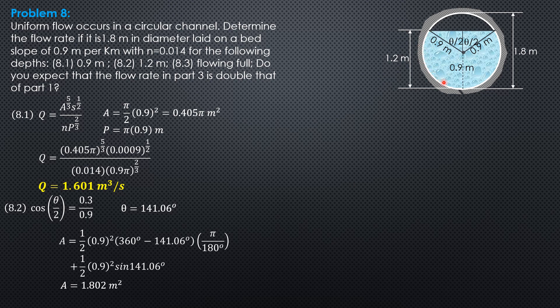While the wetted perimeter, which is this, is radius times central angle in radians. So perimeter is radius, central angle 360 degrees minus 141.06 degrees times pi over 180. Let's convert that to radians. So perimeter is 3.439 meters. So everything is calculated.